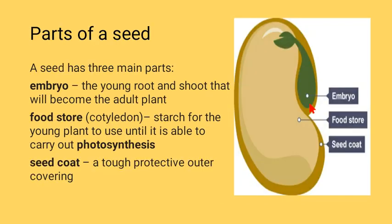First, let's discuss the parts of a seed. A seed has three main parts. First is the embryo, which is a miniature plant — it develops into roots and shoot and eventually into an adult plant on seed germination. This embryo has two portions: epicotyl and hypocotyl. Hypocotyl develops into roots and epicotyl develops into stem and leaves.